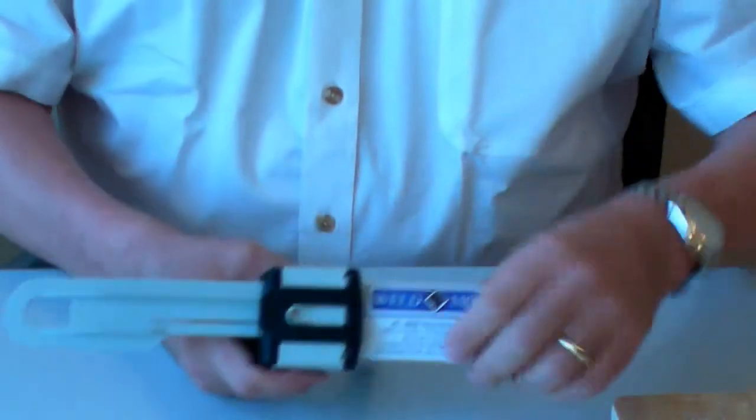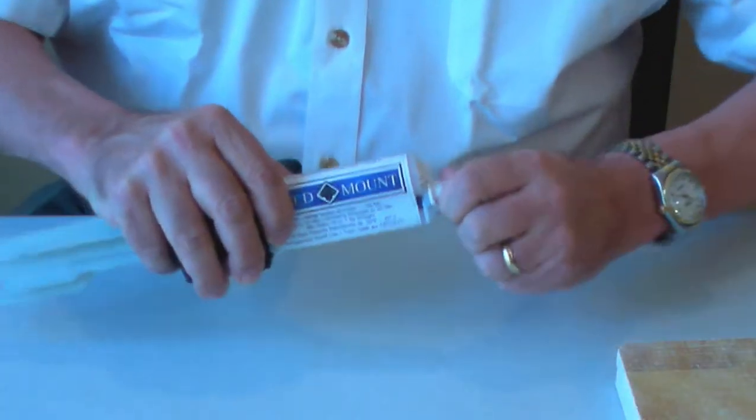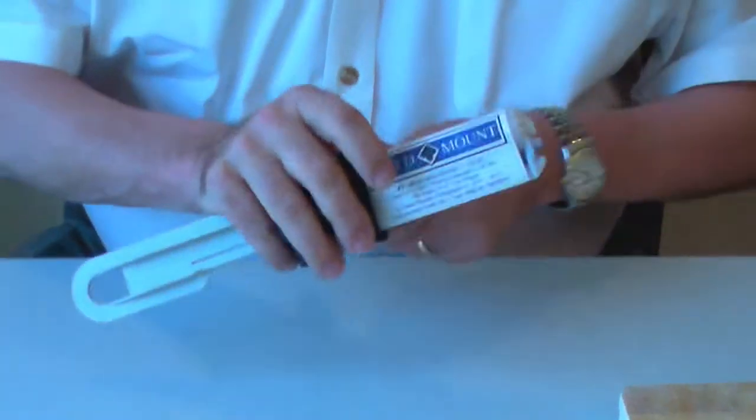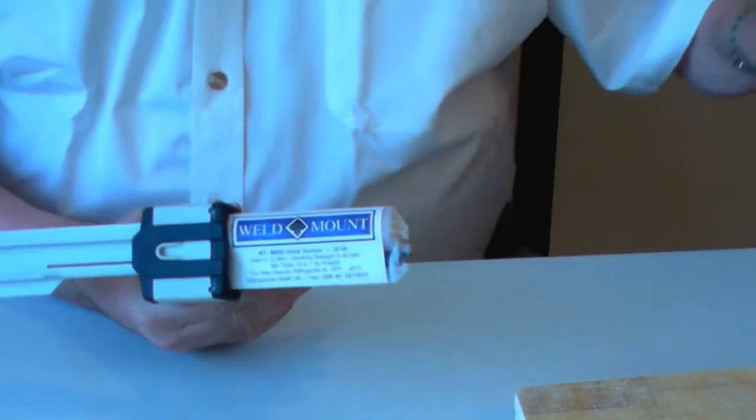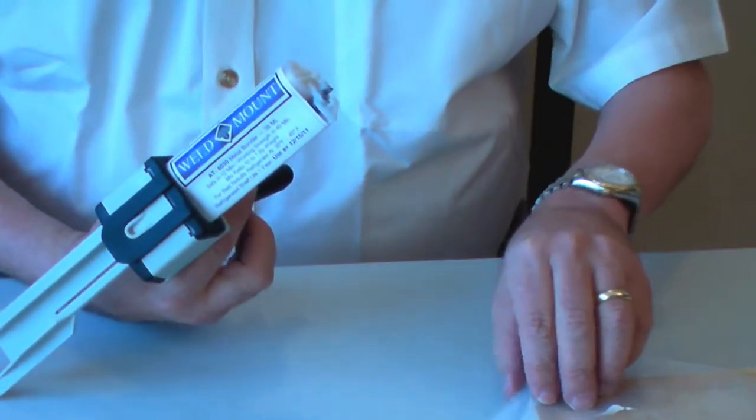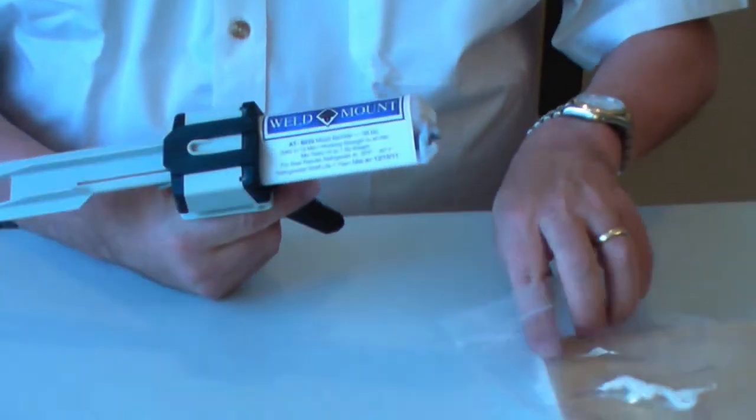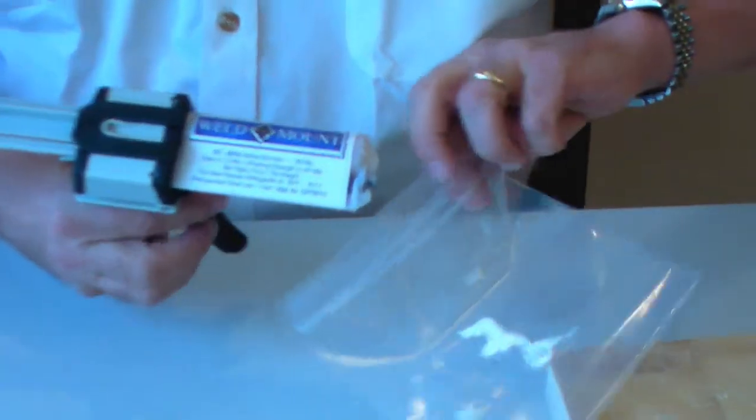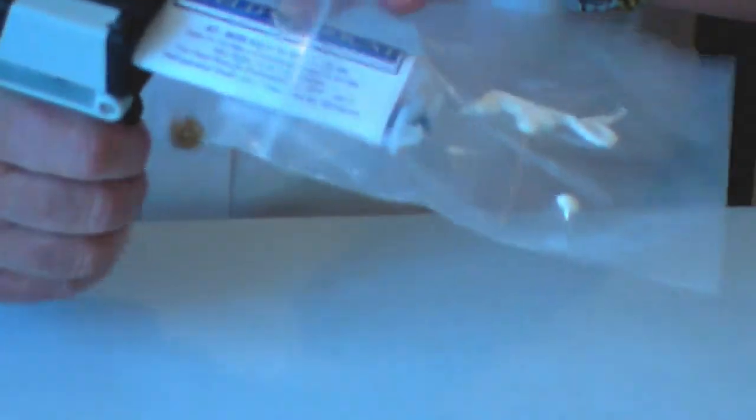Put them in and seal them in the gun. Take the cap off and with this adhesive we normally recommend that you first bleed off some of the adhesive to get out any potential air bubbles before you put the mixing tip on. Squeeze until you see the black side running.